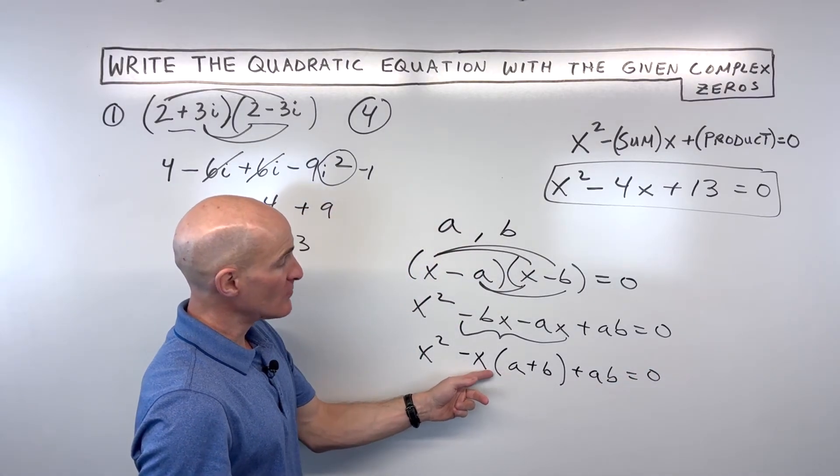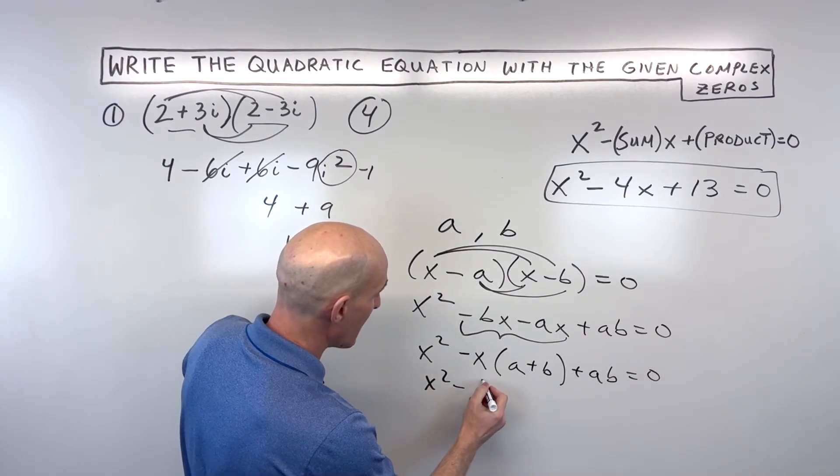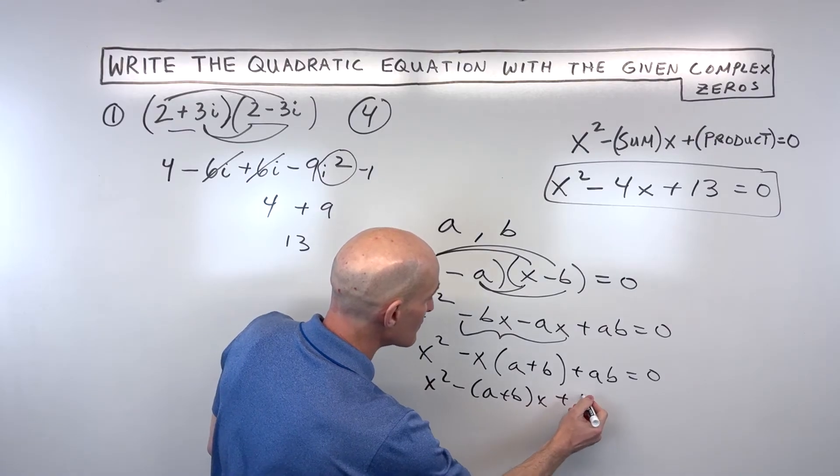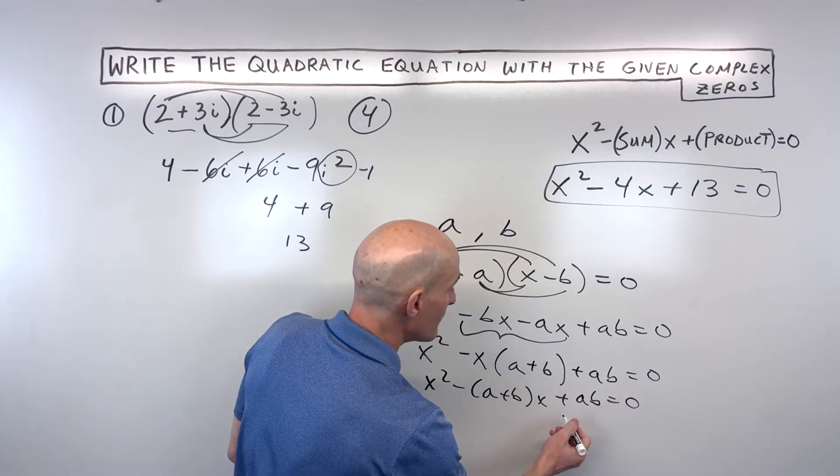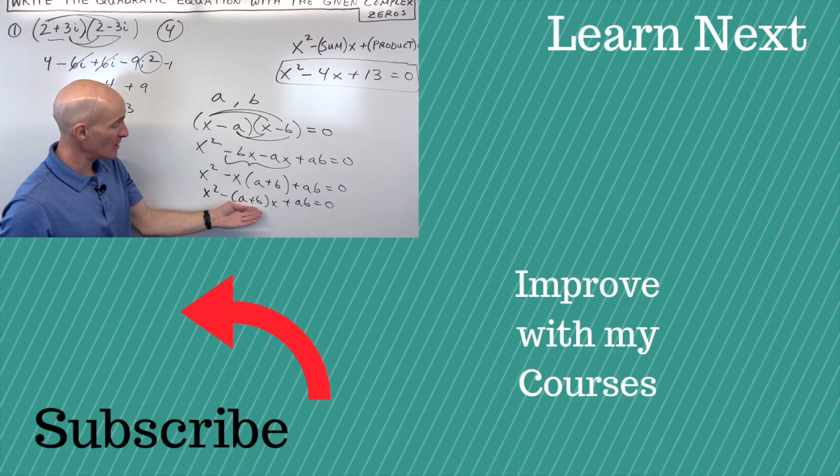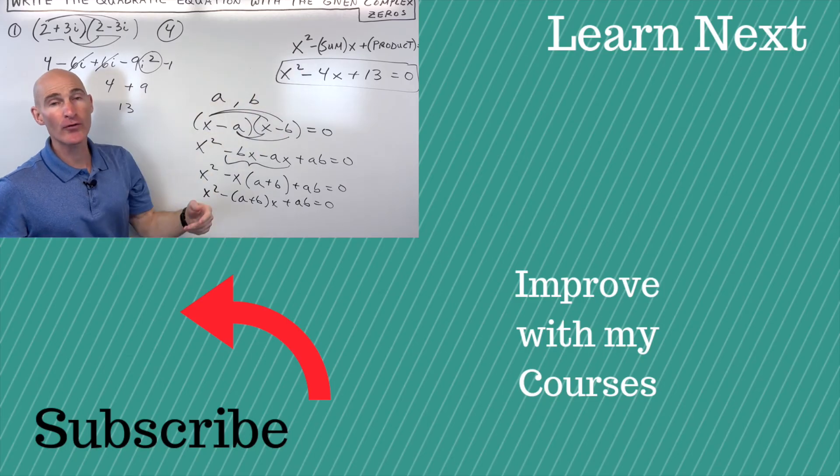And multiplication is commutative. So you can see I could change the order here. I could write this as x squared minus a plus b times x plus ab equals zero. And that's where our formula is coming from. You can see the sum of the complex zeros, that's a plus b. The product of the complex zeros, that's a times b. And that's how we're getting this shortcut formula.